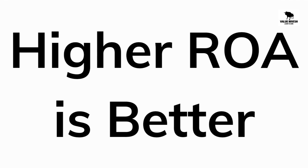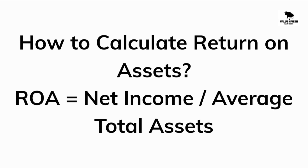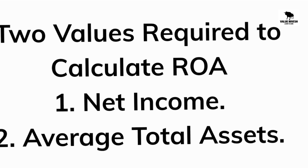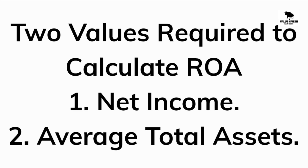How to calculate return on assets? The formula for calculating return on assets is: Return on Assets = Net Income divided by Average Total Assets. Here, net income represents the total profits earned by the company after deducting all expenses, taxes, and interest. Average total assets is the average of total assets of the company over a specific period, usually calculated as the sum of total assets at the beginning and end of the period, divided by 2.